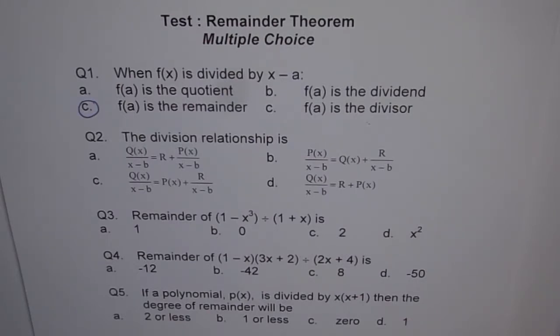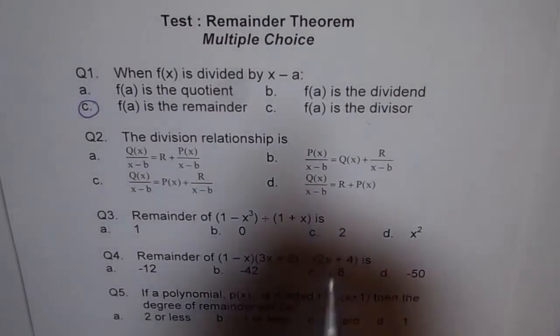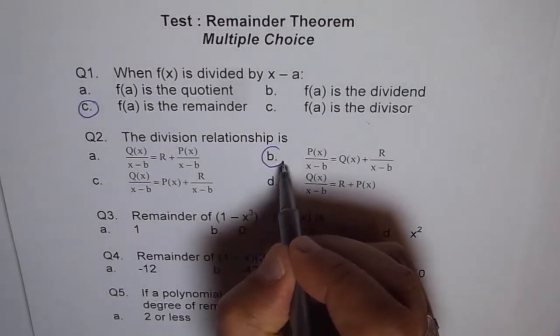Question 2. The division relationship is, so if you divide a polynomial by x minus b, you get quotient and remainder. Well, out of these statements, this one, I hope you remember, is the one which is appropriate.